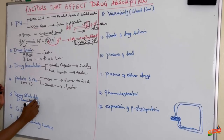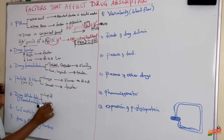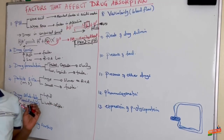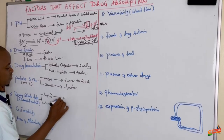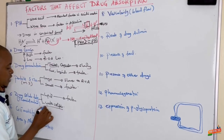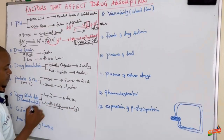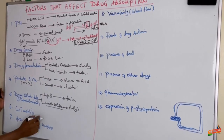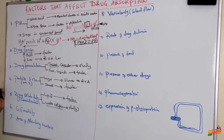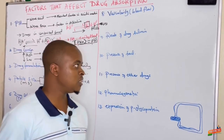Regarding drug solubility, we can talk about drugs which are lipid soluble and drugs which are water soluble. Because the cell membrane is made up of phospholipid, lipid-soluble drugs are absorbed faster compared to water-soluble drugs, which are absorbed slowly, since lipid-soluble drugs easily cross the phospholipid bilayer.